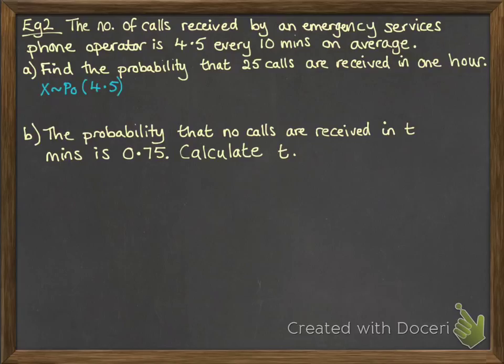So X follows a Poisson distribution with 4.5 as the average if we're looking at 10 minutes. Now we want to redefine a new distribution for what it would be for an hour. So we'll call that Y, and that's going to be 27 in an hour. We just do 4.5 times by 6 to make it large enough for an hour.